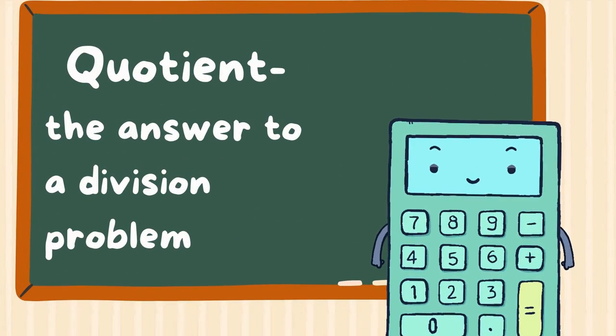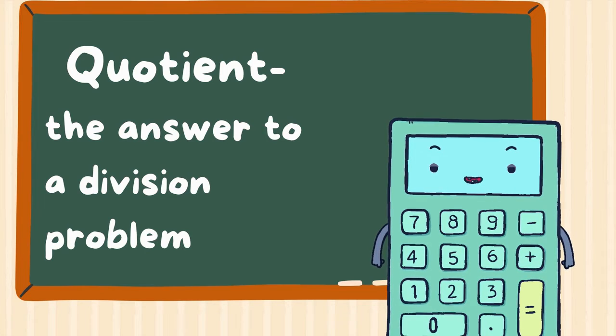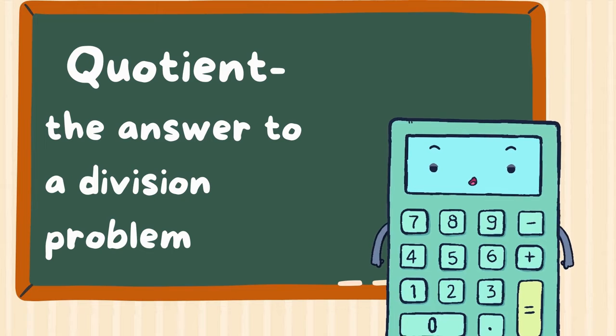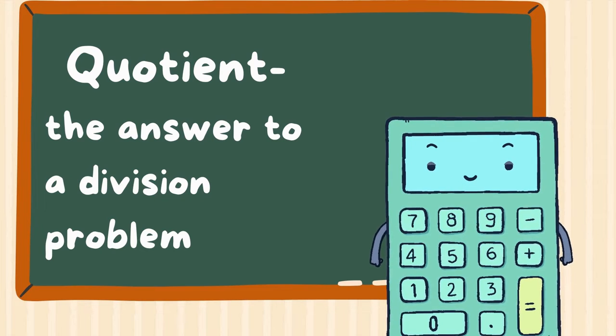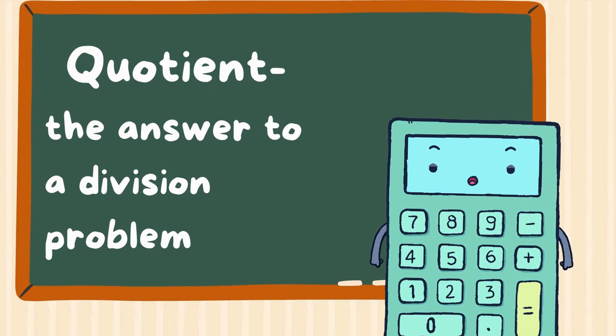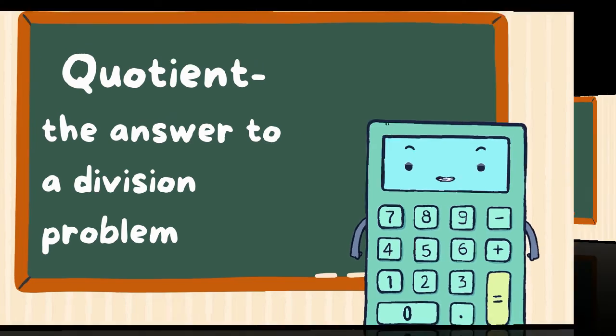The fourth word is quotient, spelled Q-U-O-T-I-E-N-T. A quotient is the answer to a division problem. When we take a larger number and divide it into smaller groups, the number of pieces in each group is called the quotient.